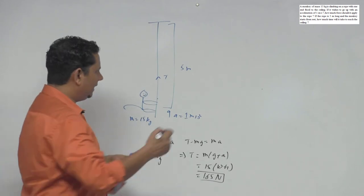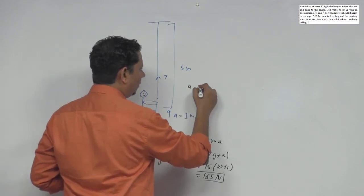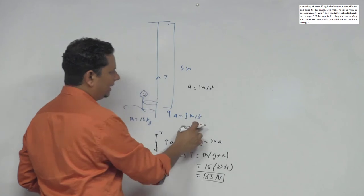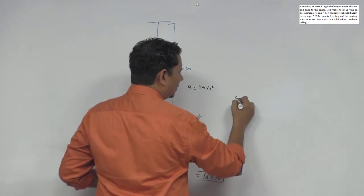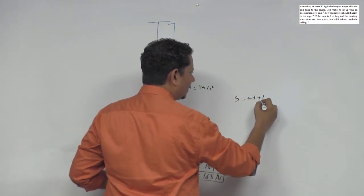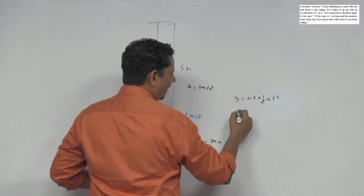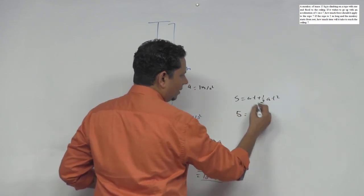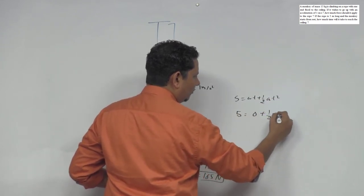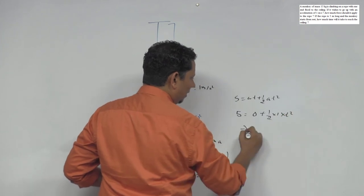Given here, your acceleration is 1 meter per second squared. So let's use the second equation: s equals ut plus half at squared. S is 5, initial velocity is zero, plus half times 1 times t squared.